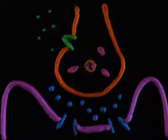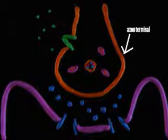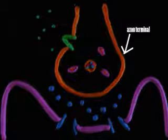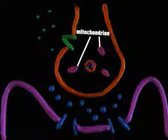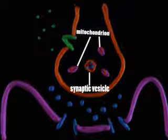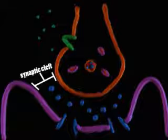The process of muscle contraction begins with the stimulation of muscle cells by nerve cells. The axon terminal of a motor neuron is illustrated here. Also shown are mitochondria inside the axon terminal, synaptic vesicles containing acetylcholine, and the synaptic cleft.